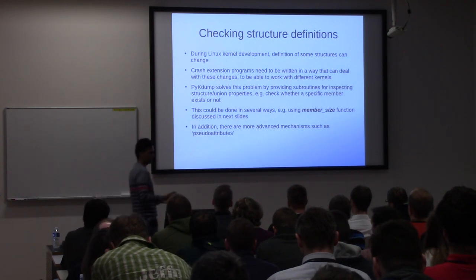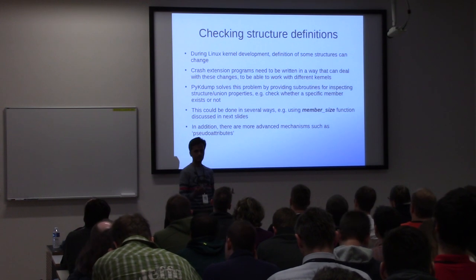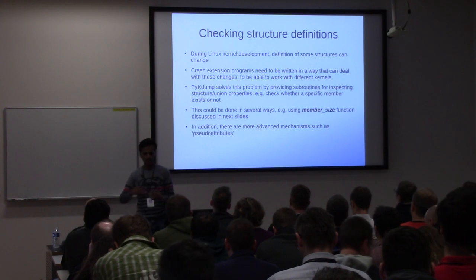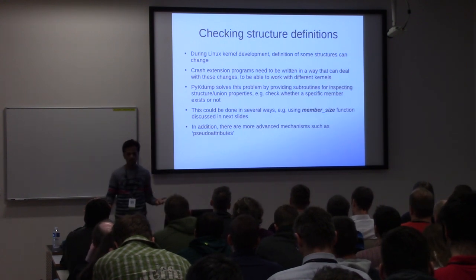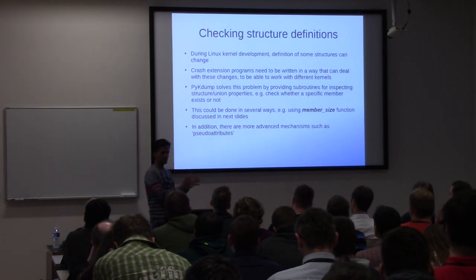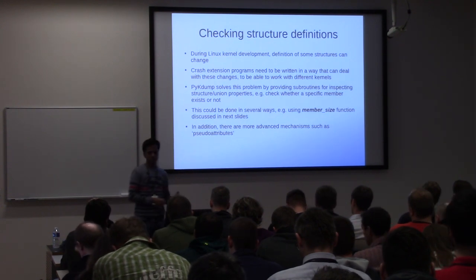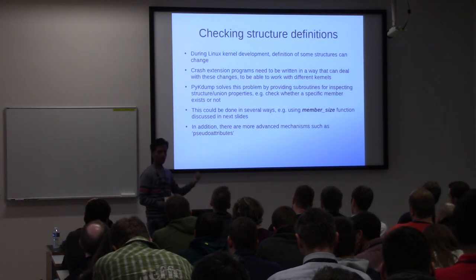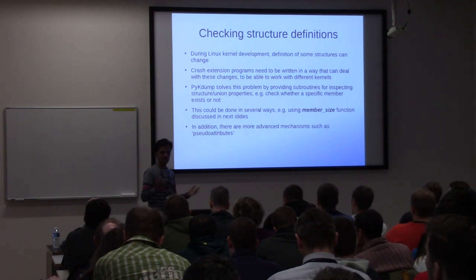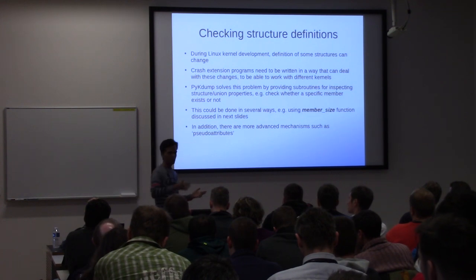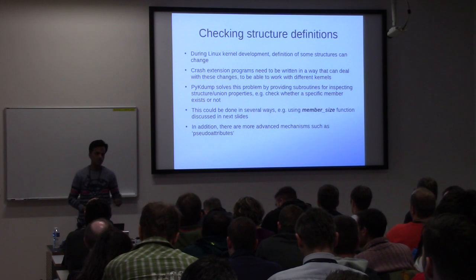Linux kernel development is rapid-paced, and there are a lot of changes happening all the time. The definitions of different structures within the Linux kernel might change over time for good reasons. If crash extensions are written keeping in mind a particular set of structure definitions, there are chances that if that structure changes over time, the extension might not work with new dumps. In PYKDUMP, we have an API call called `member_size` that we can use to verify if a particular structure has a member variable with a particular name and size. If that member exists, we process it; otherwise we can look for another match corresponding to the new structure definition.